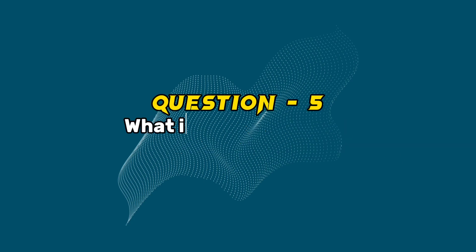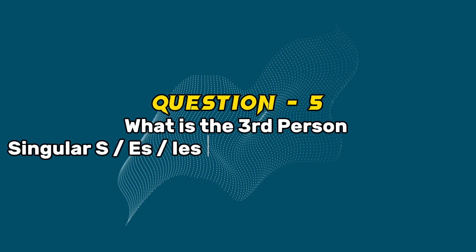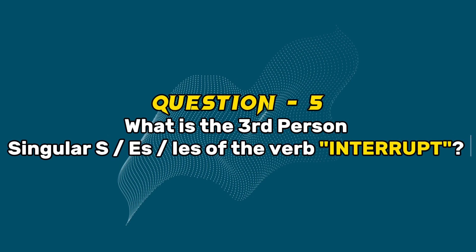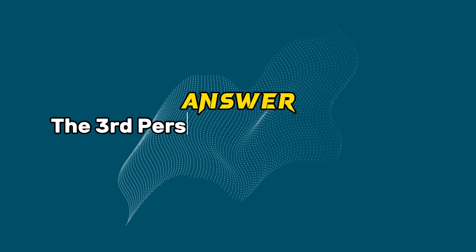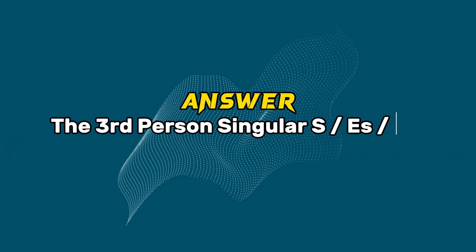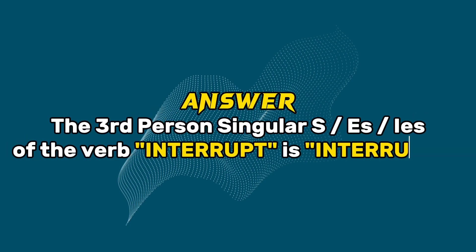Question 5: What is the third person singular of the verb interrupt? Answer: The third person singular of the verb interrupt is interrupts.